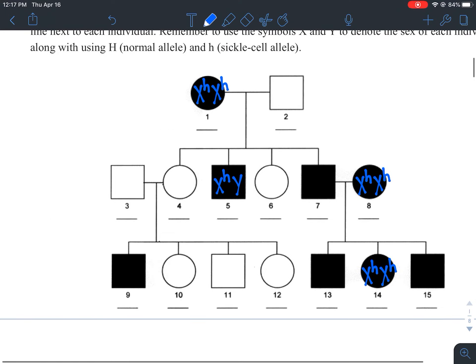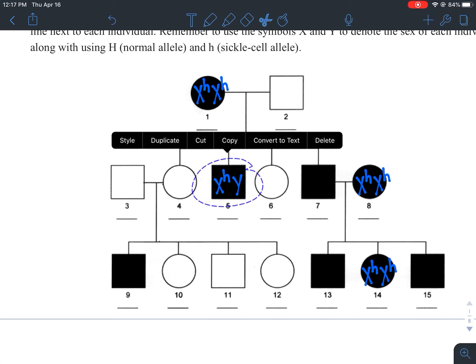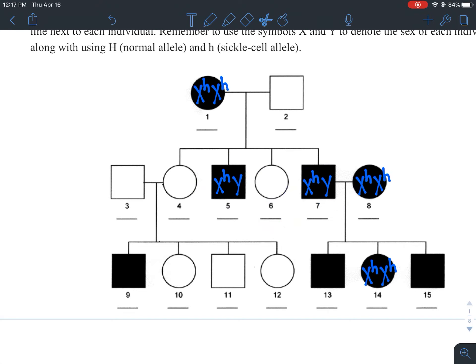So again, I'm going to just start off by adding that to all of the males that are affected with the disorder. And it's actually the easiest way to do this pedigree. What I like about it, too, is it gives you a little bit of confidence because right away you're like, oh, look at that. I have about half of them filled out already.